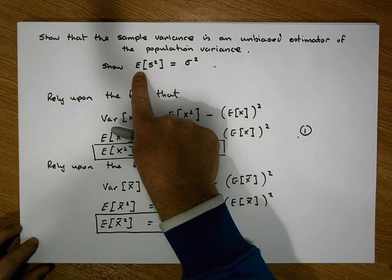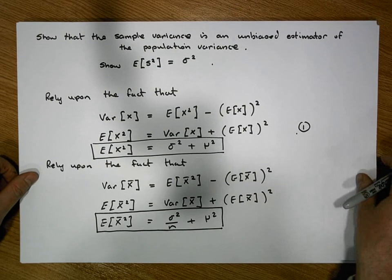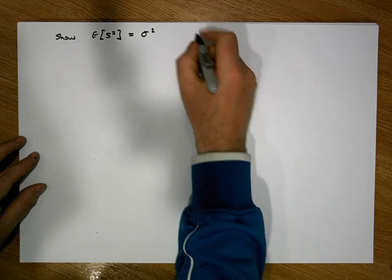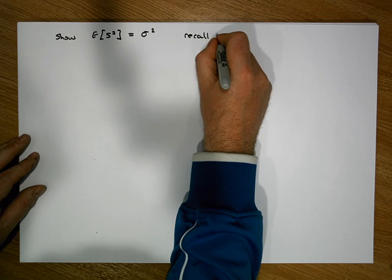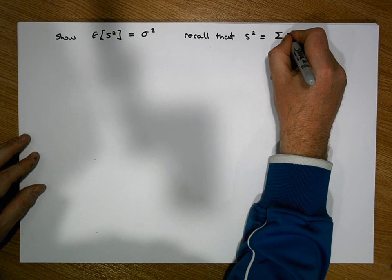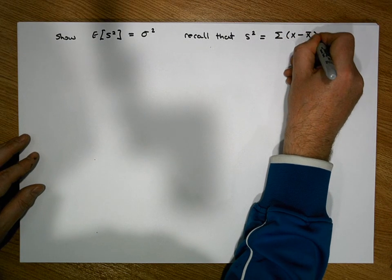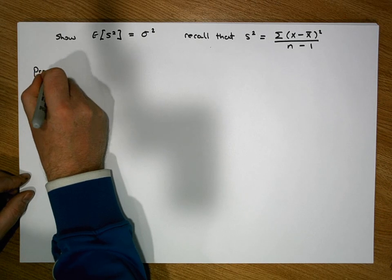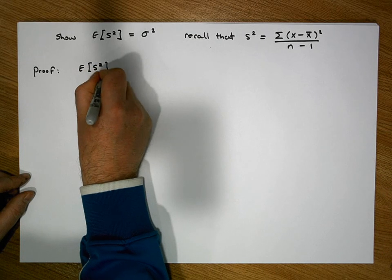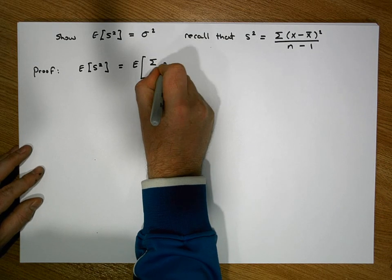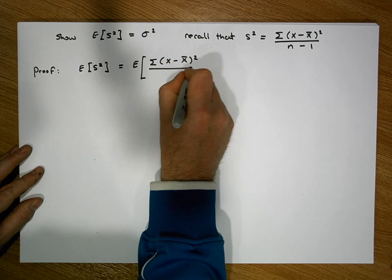We want to show that the expected value of s squared equals sigma squared. Recall that s squared, the sample variance, is defined to be the summation of the squared distances between the observations and the sample mean, divided by n minus 1. So let's take the left-hand side. The expected value of s squared equals the expected value of the summation of (x minus x-bar) squared over n minus 1.